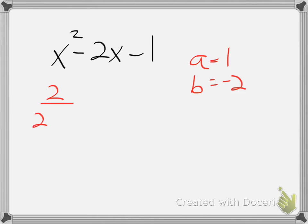So again, if I have x squared minus 2x minus 1, my a value is positive 1, my b value is negative 2, so according to my formula, the opposite of b is going to be positive 2 over 2a, so 2 over 2 gives me 1.